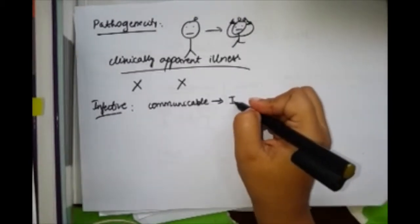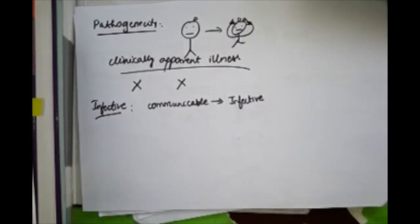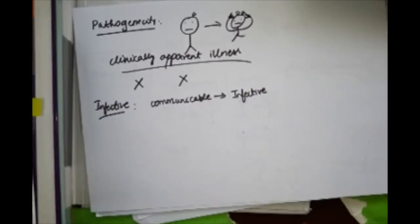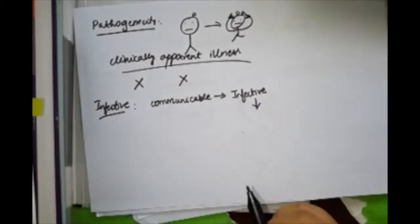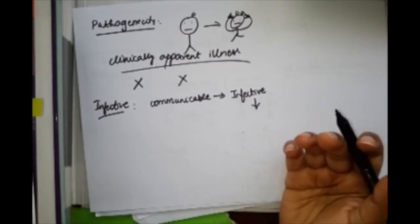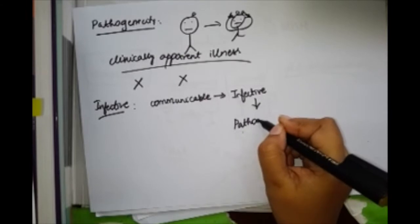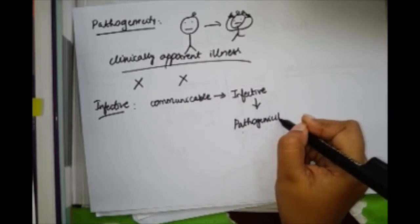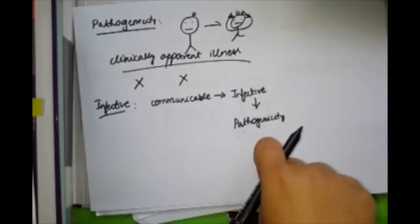After it becomes infective, after it has already sat in your head and multiplied, now it will cause your lice infestation, your scalp dermatitis or whatever. So now it will cause you pathogenicity. So communicability comes first, infective later, pathogenicity at the end.